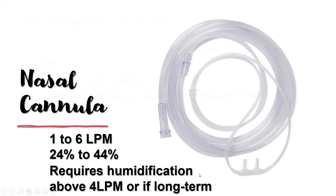The most common low flow device is the nasal cannula, administered at one to six liters per minute. Using the formula for conversion from liters per minute to FiO2, the approximate FiO2 is between 24% and 44%. This is just an approximation since there is no way to exactly measure the FiO2 of a nasal cannula. Nasal cannulas do not require humidification unless used above four liters per minute or for a long period of time — for example, more than 12 hours.